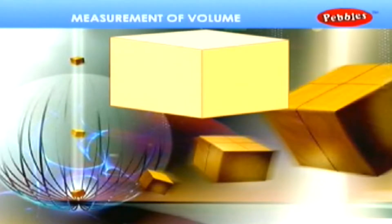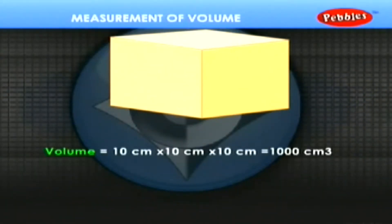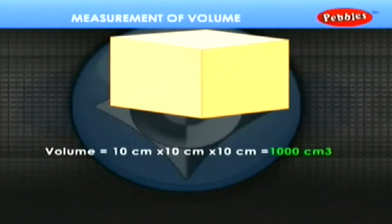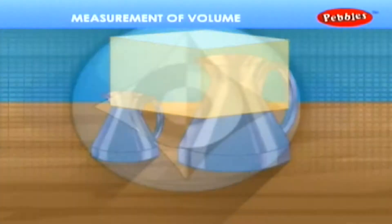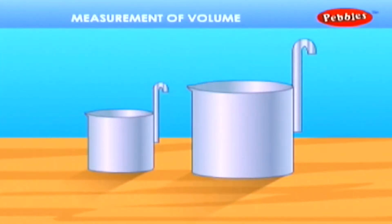What will be the volume of a cube having each side equal to 10 cm? Volume = 10 cm × 10 cm × 10 cm = 1000 cm³. But 1000 cm³ is equal to 1 litre. A litre is divided into millilitres; 1 litre equals 1000 millilitres.